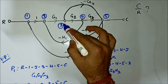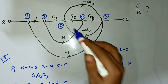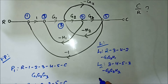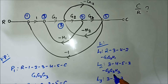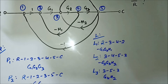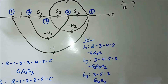A third loop is the branch from node 3 to 5 and back: 3→5→3. Here the two minus signs cancel, giving a gain of G4·H2.